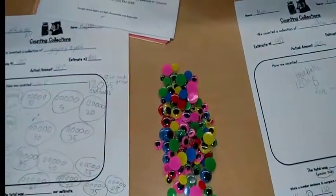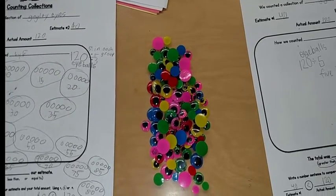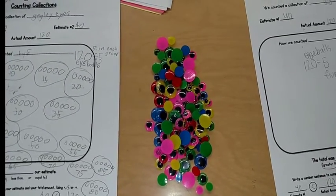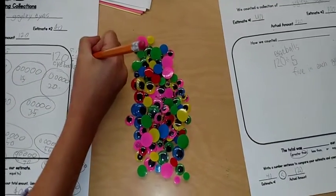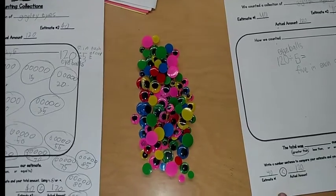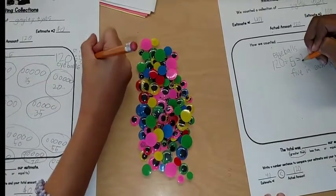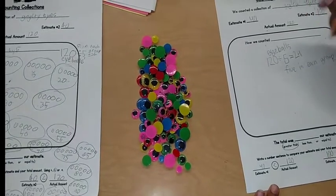24. So you had 120 eyeballs, you put five in each group. How many groups do you have? So you're going to write the equal sign after the five, and that equals 24. Groups. So right after the 24 you can write groups.